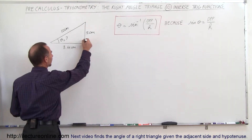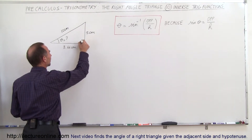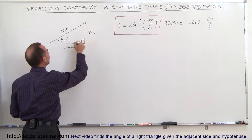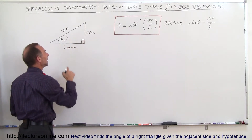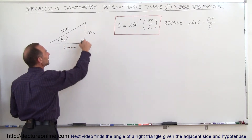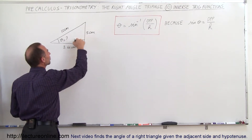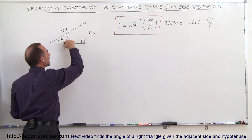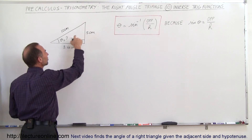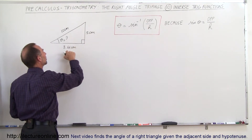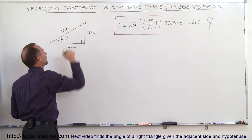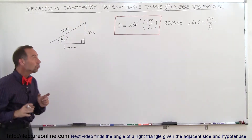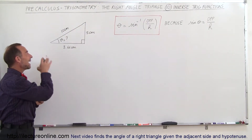This is a right angle triangle because there's a symbol indicating that's 90 degrees. Here we have the angle theta, and notice that we're given the length of the three sides. The opposite side to the angle is 5 centimeters, the adjacent side is 8.66 centimeters, and the hypotenuse is 10 centimeters. What we don't know is the angle.